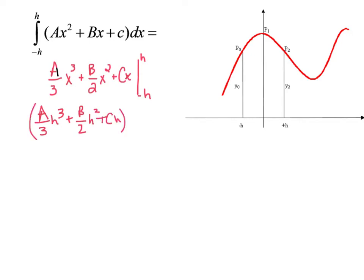Now when I plug in a negative, of course a negative cubed is negative, so it would be negative a over 3 x cubed. A negative h squared is still positive, so it would be plus b over 2 x squared minus cx.